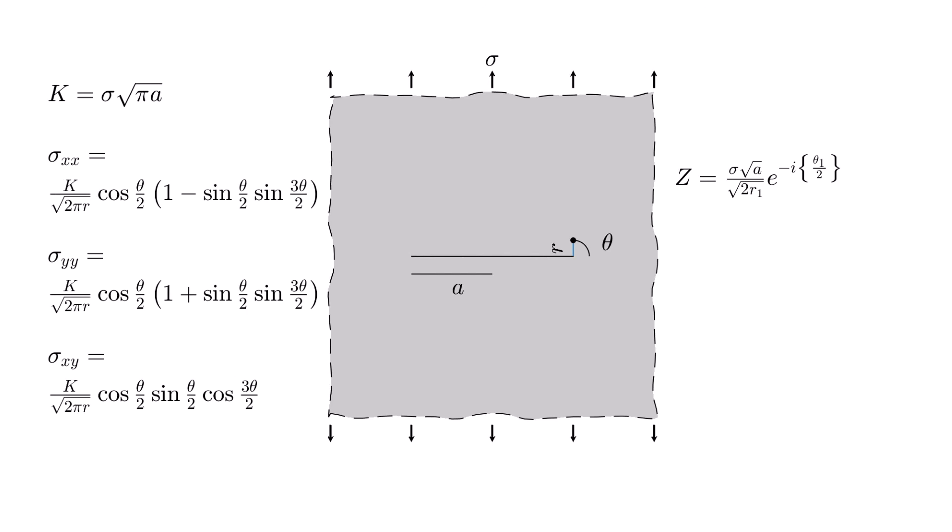It's of note that these are commonly written with the square root of pi in the numerator and denominator as shown. This makes it so that K can easily be related to equations describing energy release rates.